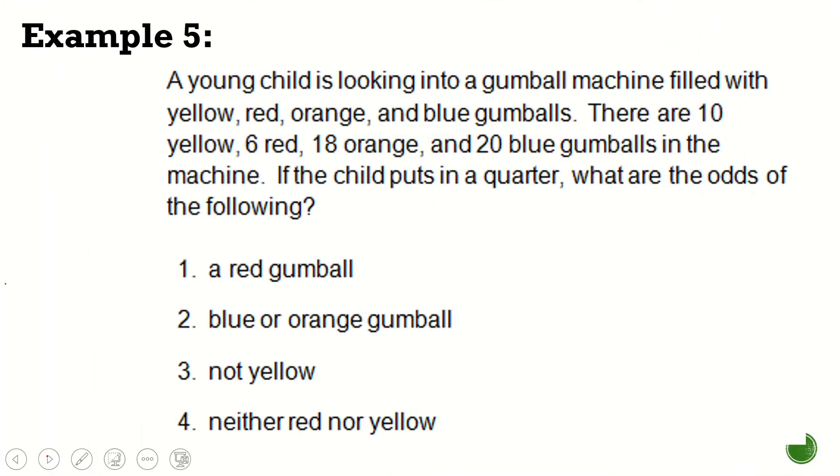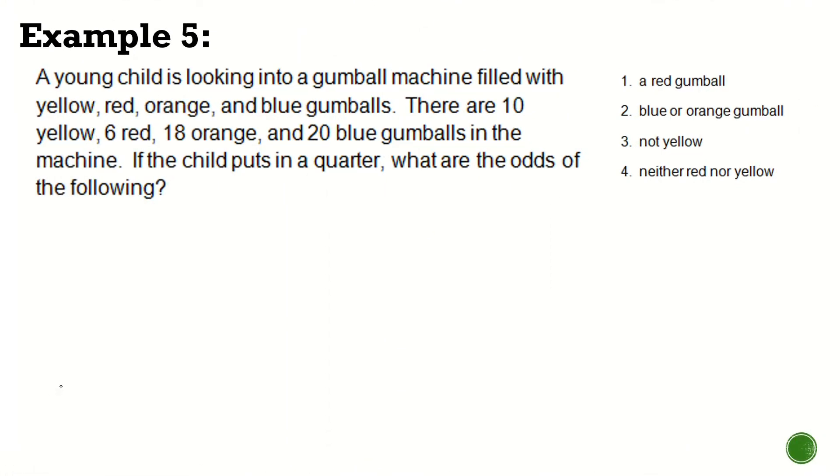Let's go to the fifth example and the last one. A young child is looking into a gumball machine filled with yellow, red, orange, and blue gumballs. There are 10 yellow, 6 red, 18 orange, and 20 blue gumballs in the machine. If the child puts in a quarter, what are the odds of the following? Let's answer the first one first. So red gumball. So this will help us answer this problem. The odds of getting a red gumball. So we have how many reds here? Six.